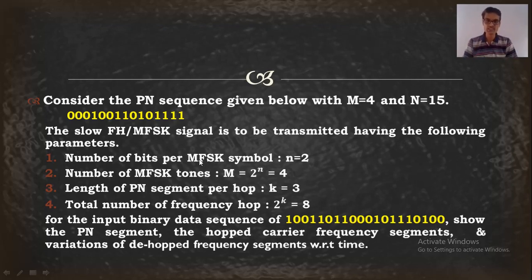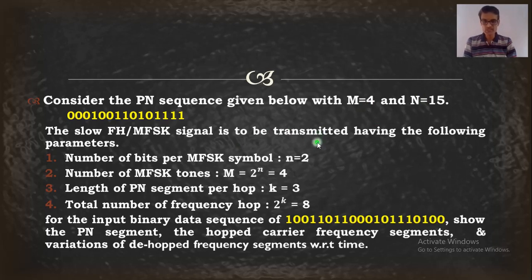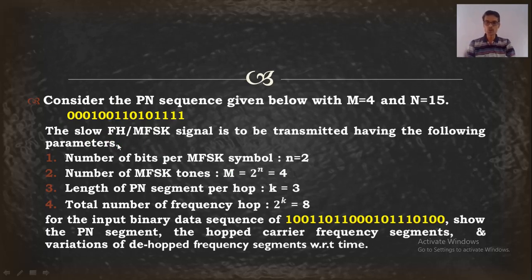FHSS can be used in CDMA mobiles. FHSS is better than DSSS because synchronization between the two PN sequence generators is not as stringent compared to DSSS. Now I'll go to the problem to understand exactly how the switching between frequencies works. Consider a PN sequence with M equal to 4 and N equal to 15, so the length of the PN sequence is 15. M equal to 4 refers to the number of MFSK tones: f1, f2, f3, f4. This is a 15-bit PN sequence. For slow FH-MFSK: number of bits per MFSK symbol is 2, so I make a group of two bits in the information sequence giving four MFSK tones.